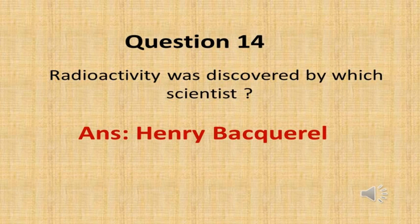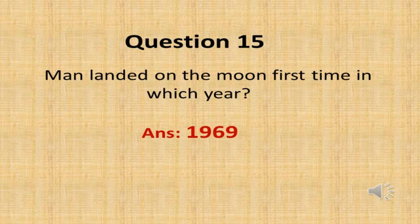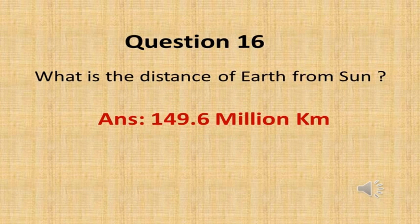The next question is: radioactivity was discovered by which scientist? The answer is Henry Becquerel. The next question is: man landed on the moon for the first time in which year? The answer is 1969. The next question is: what is the distance of Earth from the Sun? The answer is 149.6 million kilometers.